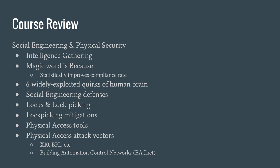We then covered social engineering and physical security. We discussed intelligence gathering topics, and the magic word of social engineering — 'because' — statistically improves compliance rate. But it depends on what reason you give. We discussed six widely exploited quirks of the human brain, social engineering defenses, locks and lockpicking, lockpicking mitigations, commercially available physical access tools, and physical access attack vectors such as X10, broadband over power lines (BPL), and building automation control network access points.